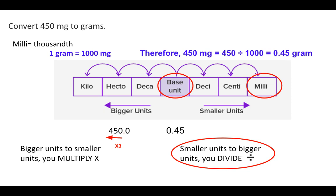For this assignment, if you have to use division, use a calculator. For example, if you have the number 650 and need to divide by 1,000, use a calculator to find what decimal you end up with.